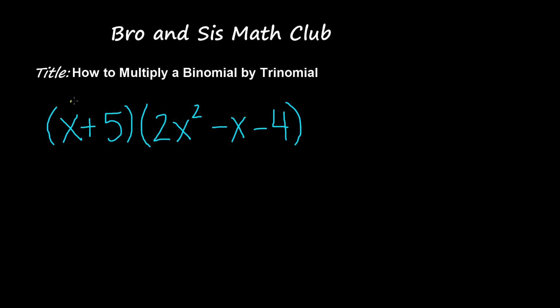So first I'm going to go ahead and distribute x to 2x squared. So when you multiply 2x squared by x we get 2x cubed. Now we multiply x by negative x. So now we're distributing x to negative x and that will give us negative x squared.